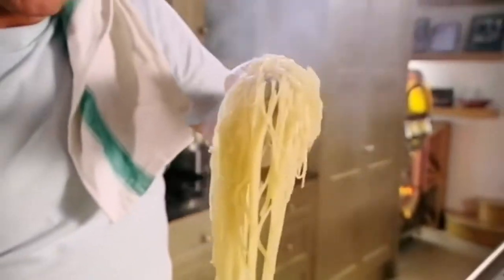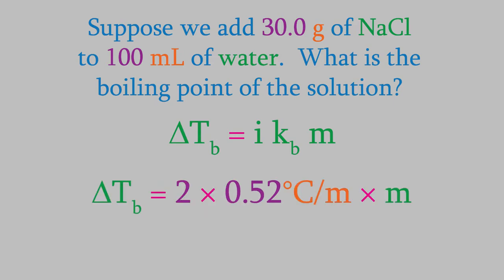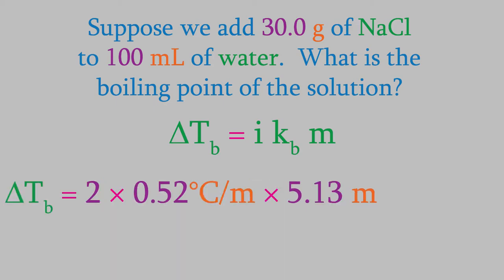Let's try a problem with this. Suppose you add 30.0 grams of sodium chloride to 100 milliliters of water. What will be the boiling point of this solution? This is just like our previous problem, except we're going to look at the boiling point instead of the freezing point. Just like last time, the van't Hoff factor is 2. Kb is the boiling point elevation constant. For water, that's 0.52 degrees Celsius per molal. Finally, we need the molality. It's the same as it was in the previous problem, which is 5.13m.